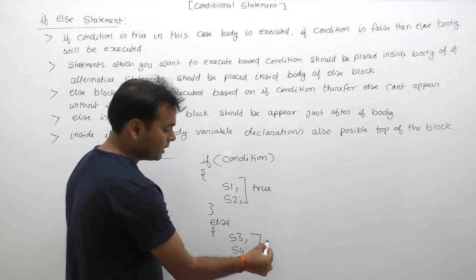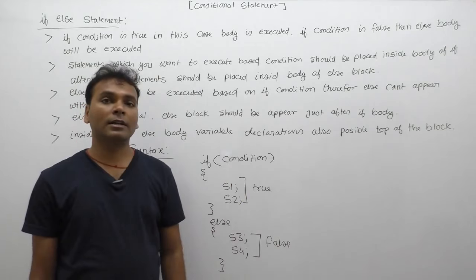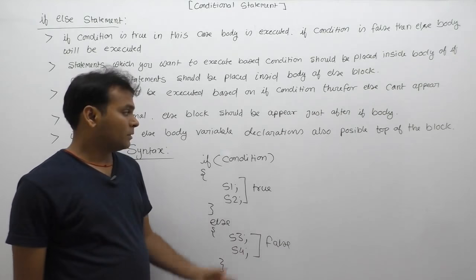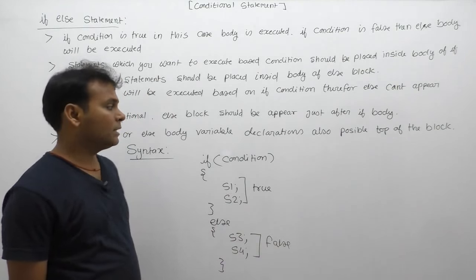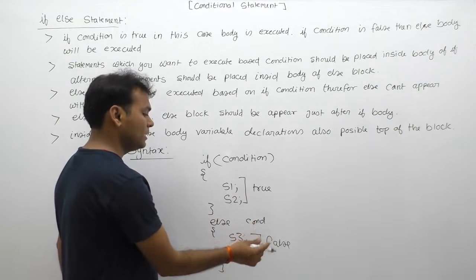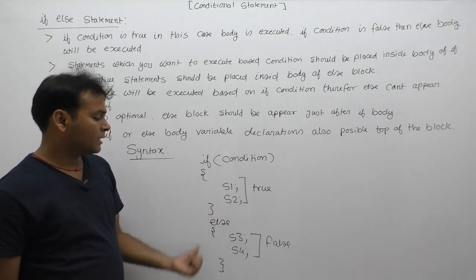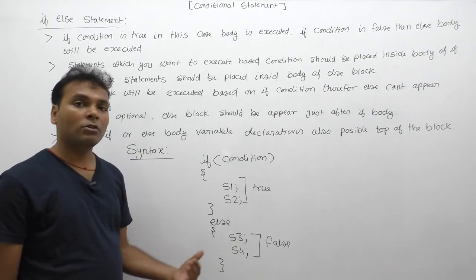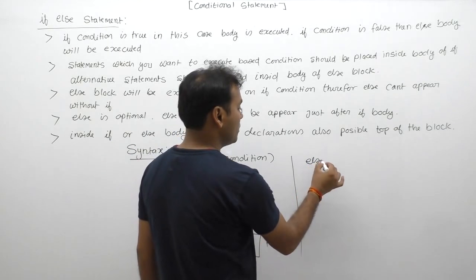So in total there are two possible cases: condition true or condition false. If the condition is true, statements placed inside the body of if execute. If the condition is false, statements placed inside the else block execute. The else block is optional — it is not compulsory. You can write if without else. However, else without if is not possible, and you cannot provide a condition directly with the else block.